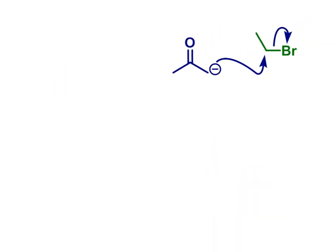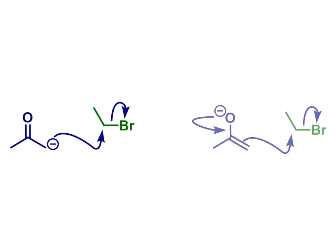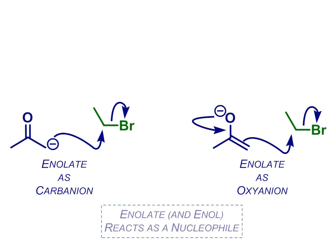However, do remember that more of that negative charge will be localized on the oxygen given its greater electronegativity. So it's better practice to show the enolate reacting as on the right here. Either way, the key take-home is that the enol and the enolate react as nucleophiles at that alpha carbon.